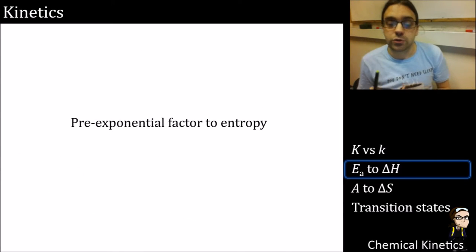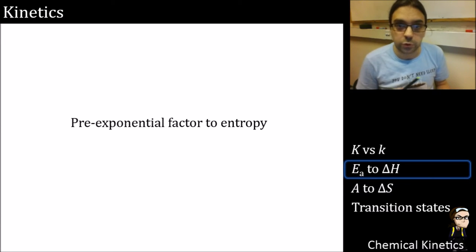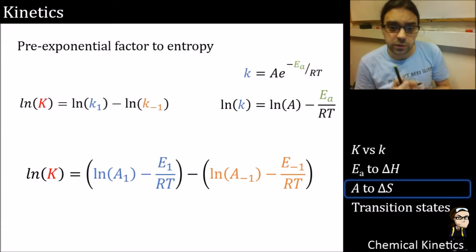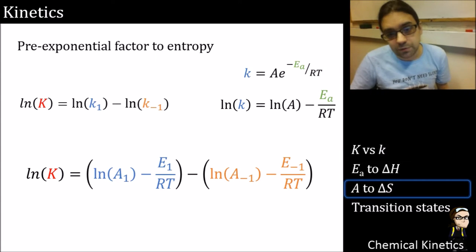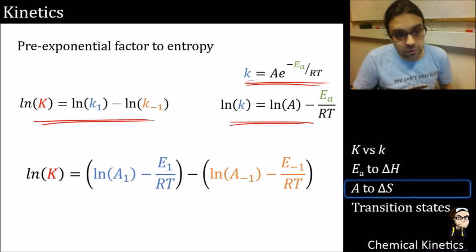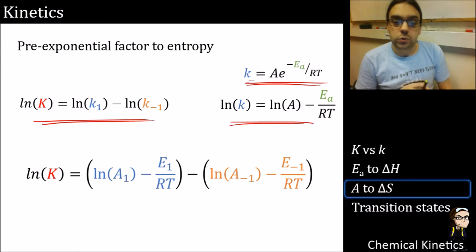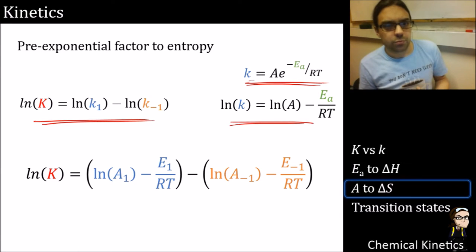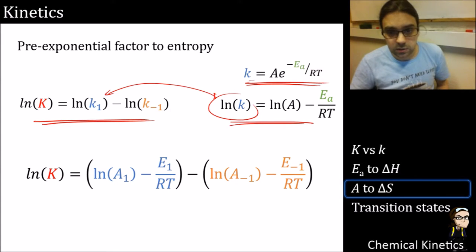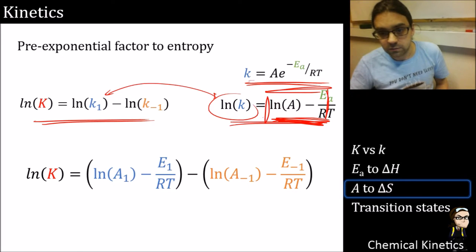Now the pre-exponential factor to entropy. I gave you this in condensed form in the lecture notes, so we'll go through it step by step. We start with the Arrhenius equation, linearize it, and also use that relationship we had before. We substitute each of the k values - the rate constants - using their Arrhenius form.